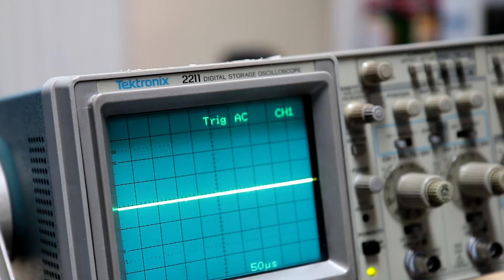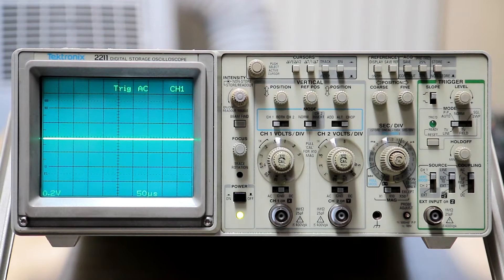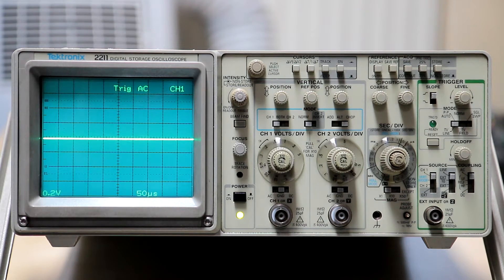Quick look at the front panel. Pretty standard layout for an old scope. You can see the two analog inputs with the vertical control above them. To the right you've got the horizontal time base. To the right of that you've got the external trigger input and a variety of triggering options.